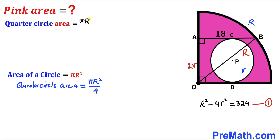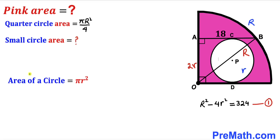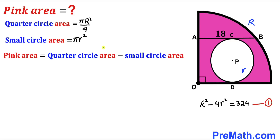Now let's calculate the area of the small white circle. Using the area formula π r², where lowercase r is the radius of the smaller circle, the area of the small circle is π r².